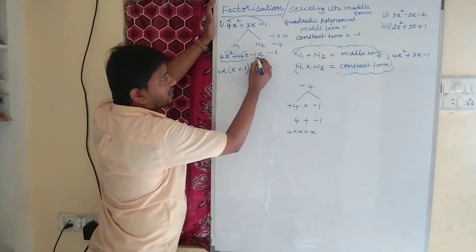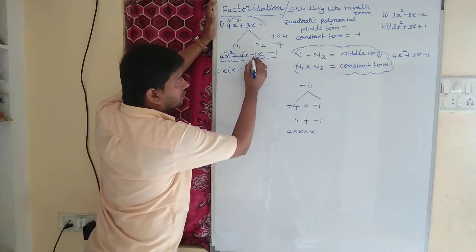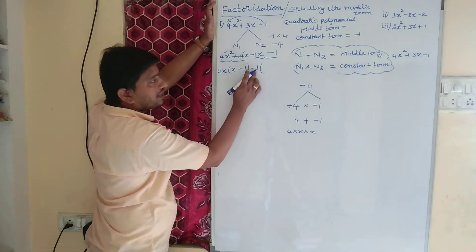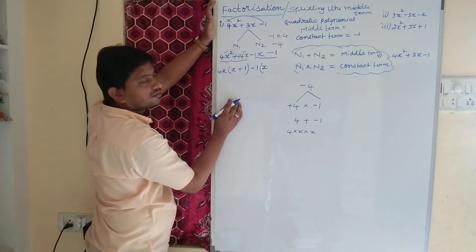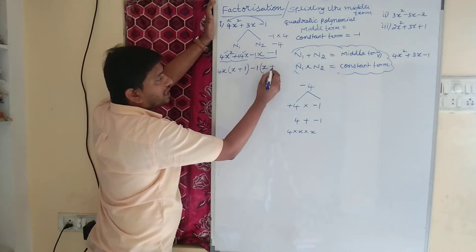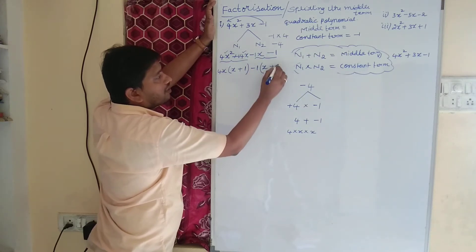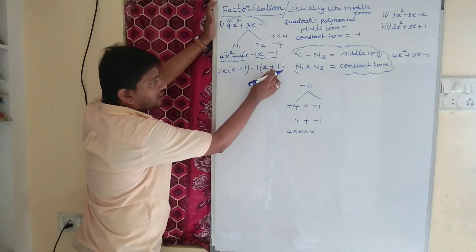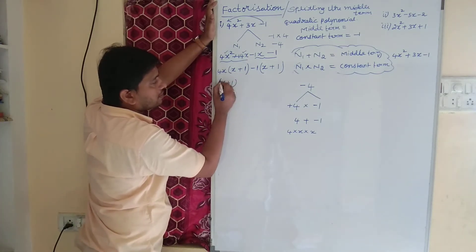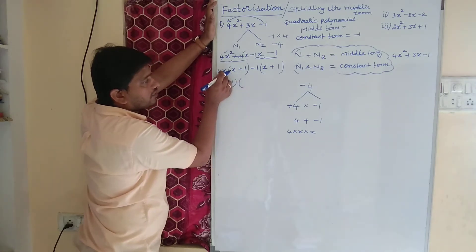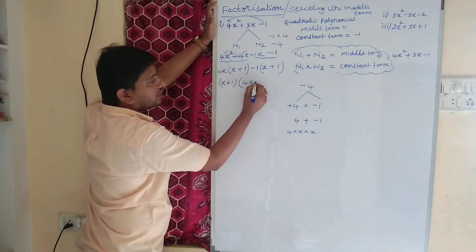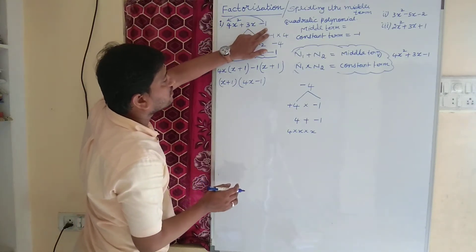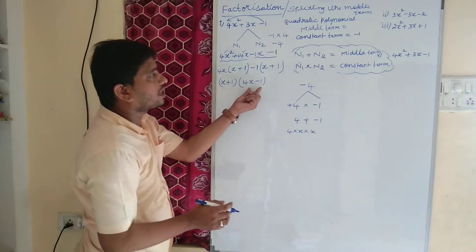Now we have minus 1x minus 1. From these two terms, let me take minus 1 as common: minus 1 into x gives minus 1x, and minus 1 into plus 1 gives minus 1. Now we have x plus 1 in both groups, so I can take x plus 1 as common. That leaves 4x and minus 1, giving 4x minus 1. So the factors of 4x square plus 3x minus 1 are (x + 1) and (4x − 1).